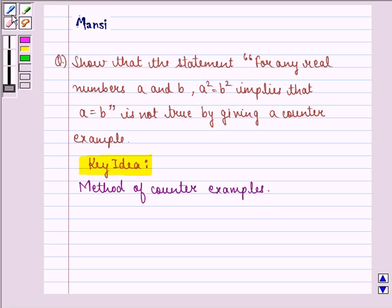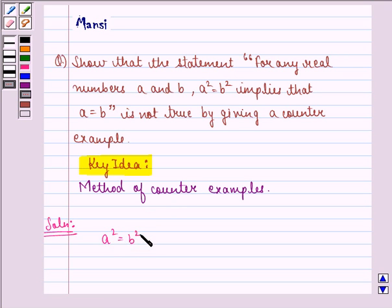Let us start with the solution to this question. Now, we are given that A square equals to B square implies that A is equal to B for real numbers A and B.